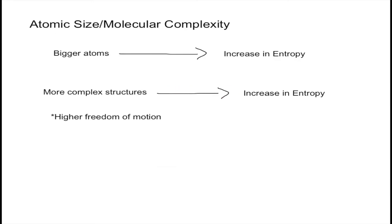Finally, the last factor involves atomic size and molecular complexity. Bigger atoms will have an increase in entropy, meaning that as you go down a group in the periodic table, the entropy of those atoms or elements will increase. And for molecular complexity, when you have more complex structures, it leads to an increase in entropy because of a higher freedom of motion.